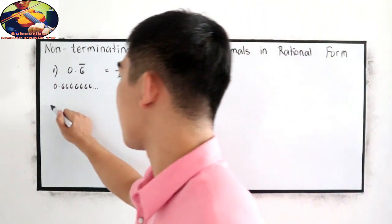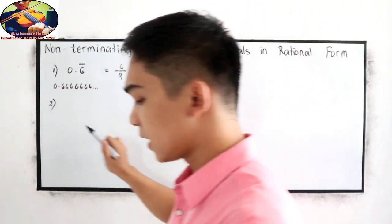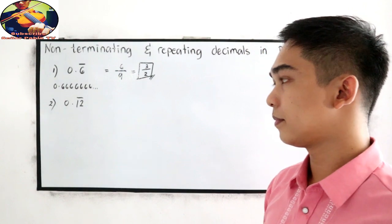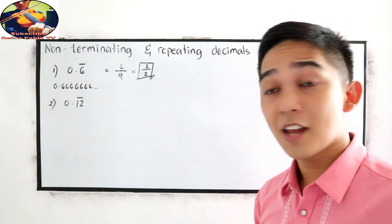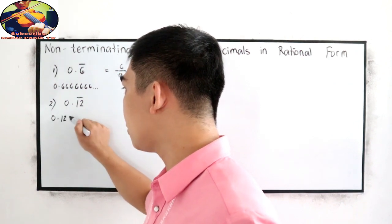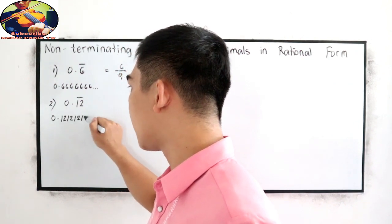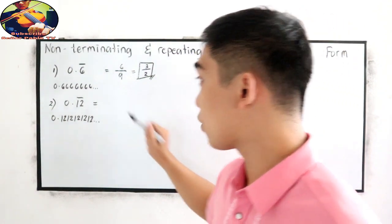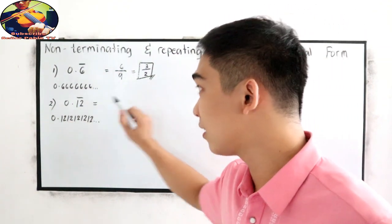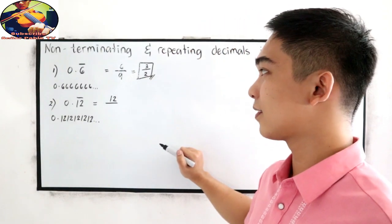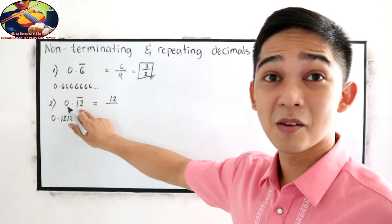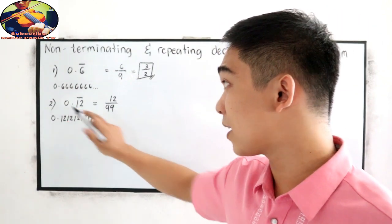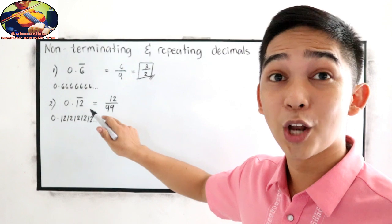Next, our second case. Let's say 0.12 bar. That is equivalent to 0.121212121212 and so on. That is equal to: copy 12 — we have 2 decimal places under the bar, so we write 9, 9 on our denominator. Two decimal places, so we have 99 on our denominator.